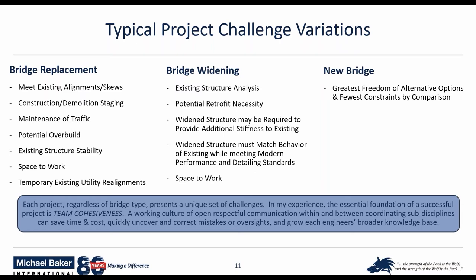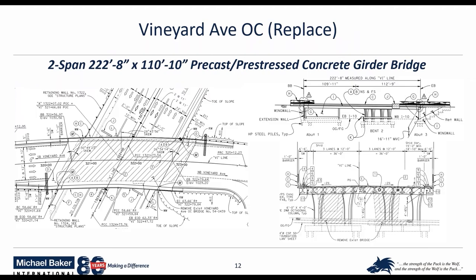Here's the Vineyard overcrossing — a two-span, 222-foot-8-inch-long bridge, 110 feet 10 inches wide. It uses precast, pre-tensioned concrete girders. Seemingly a normal, boring highway bridge, but it was certainly not boring and not lacking in challenges — really fun to design.